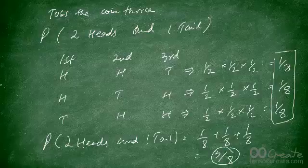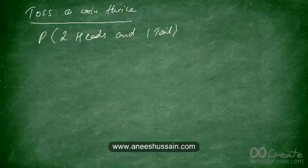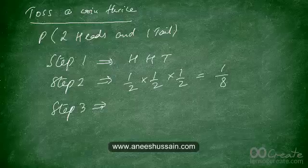That was the slightly longer way. Now let's use the shortcut: the three-step method. Step 1: write down one favorable outcome — Head, Head, Tail. Step 2: find the probability of that outcome — 1/2 × 1/2 × 1/2 = 1/8. Step 3: multiply the answer of Step 2 with the number of possible arrangements of HHT.